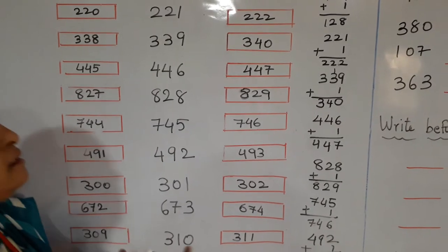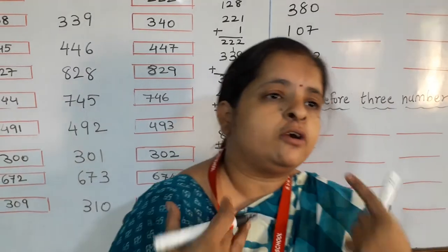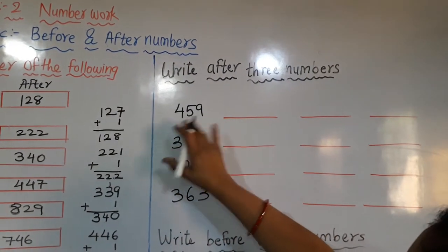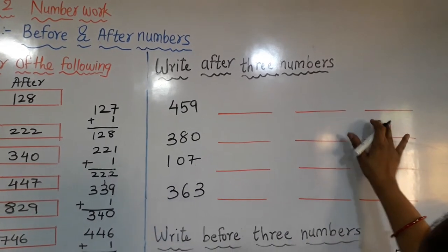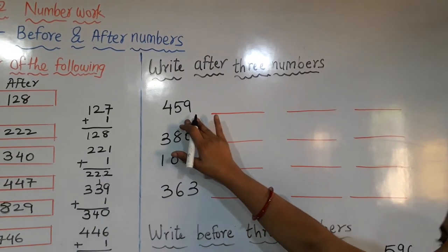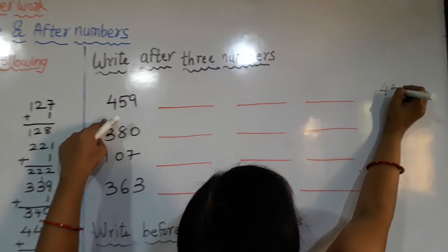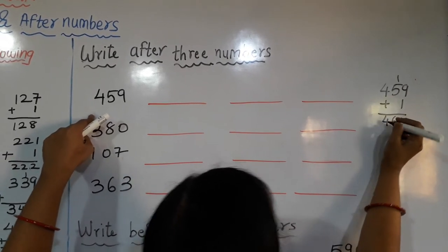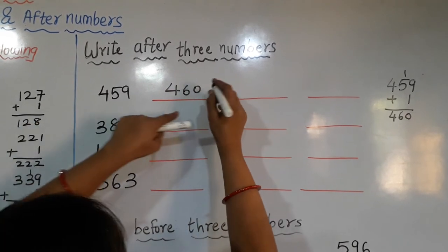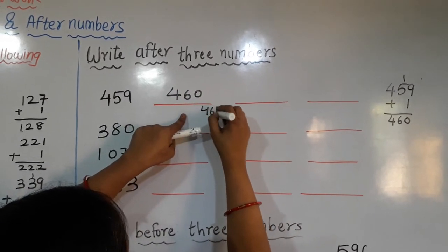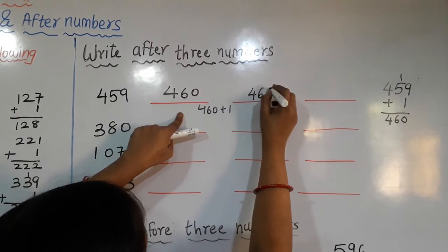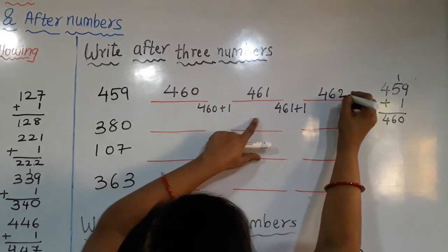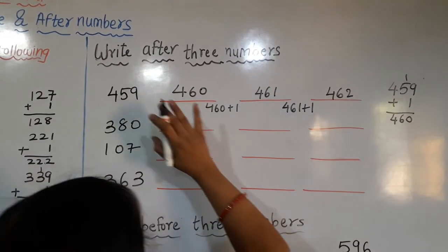Now, after this, in 4th standard you are going to learn something more. See here — how you are going to write the next 3 numbers after a given number. We have to add 1 each time. Like 459: 459 plus 1 is 460, then 460 plus 1 is 461, then 461 plus 1 is 462.